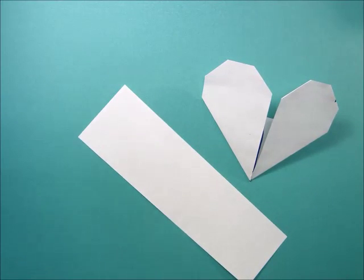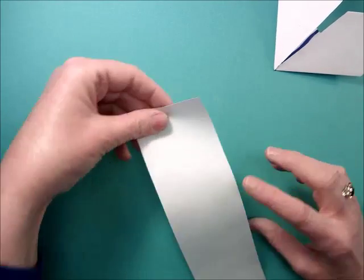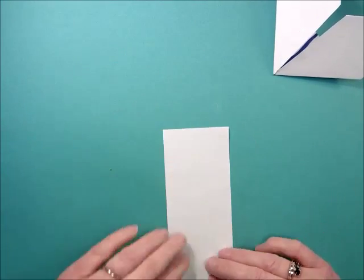To make your origami heart, you're going to start with a long, skinny piece of paper. And then you're going to turn it so that it's vertical.